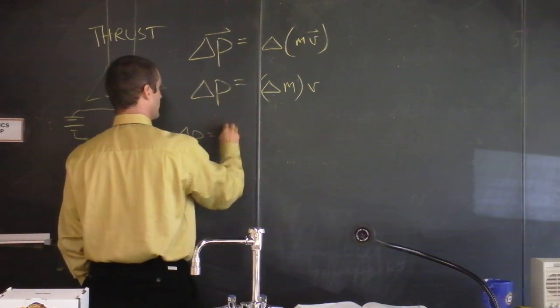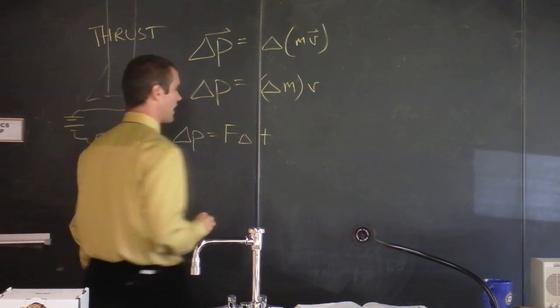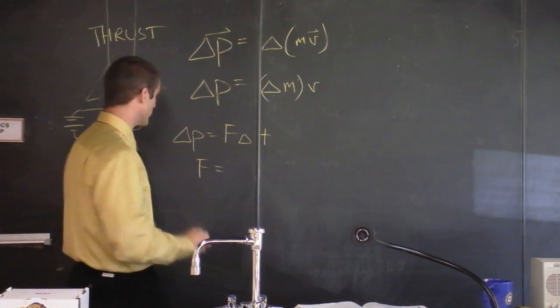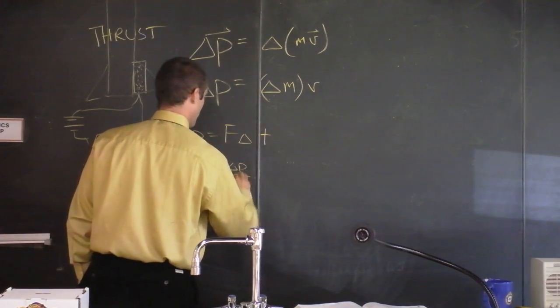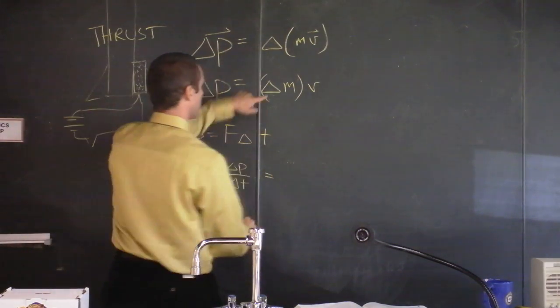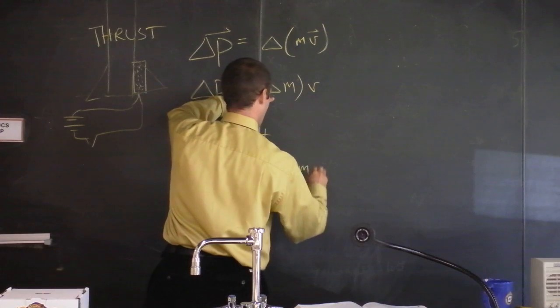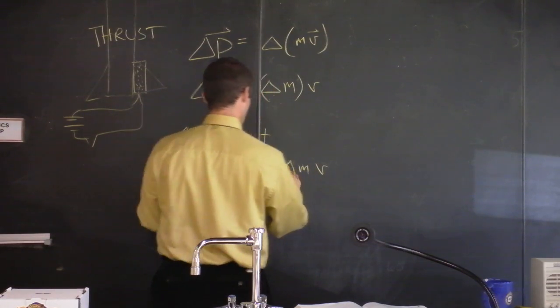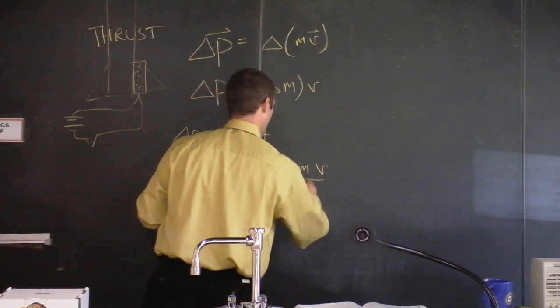So if we solve this for force, we could find that the force is delta P over delta T. And my plan is to take delta P right here, which is delta M times V, and divide that by T.